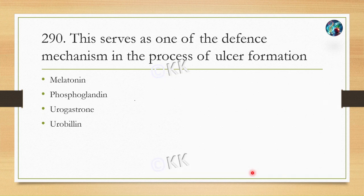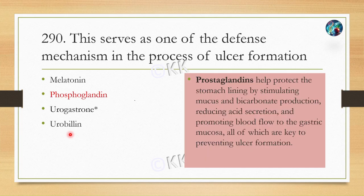Next question: which serves as one of the defense mechanisms in the process of ulcer formation? Option A Melatonin, option B Prostaglandins, option C Urogastrone, option D Urobilin. The correct option is option B, Prostaglandins. Prostaglandins help to protect the stomach lining by stimulating mucus and bicarbonate production, reducing acid secretion, and promoting blood flow to the gastric mucosa, which altogether prevents ulcer formation.